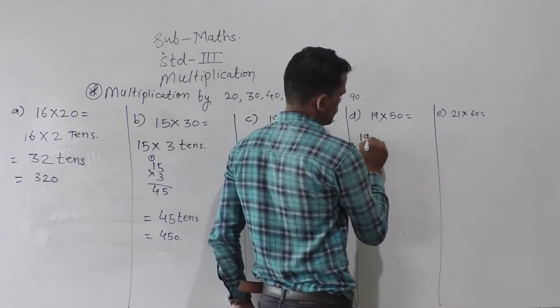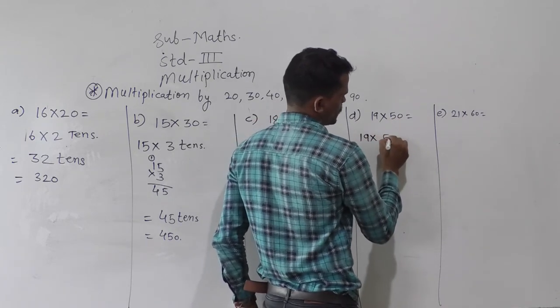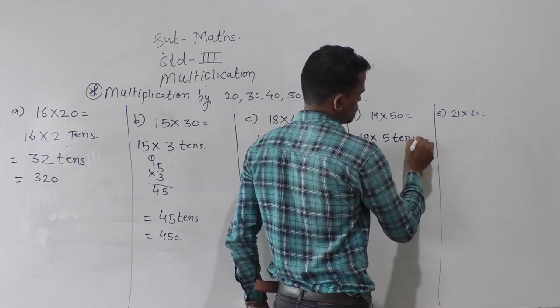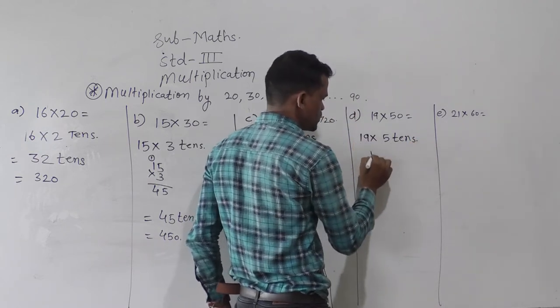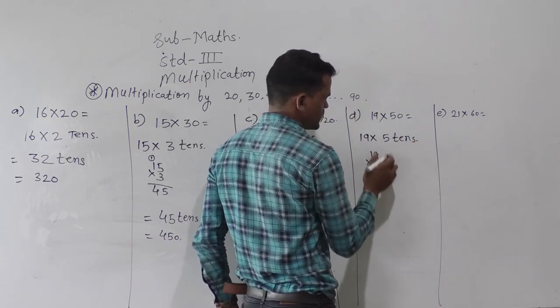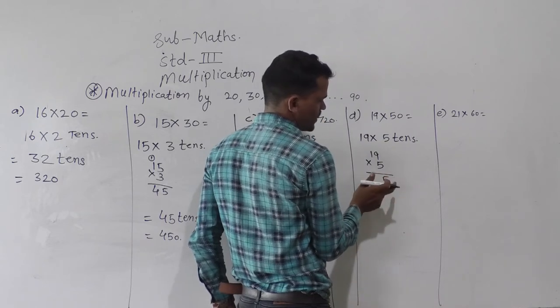Then next 19 into 50 means 5 tens. Now do this multiplication 19 into 5. 5 nines are 45, right 5 here, 4 carry.